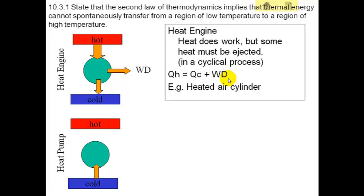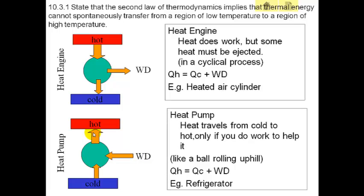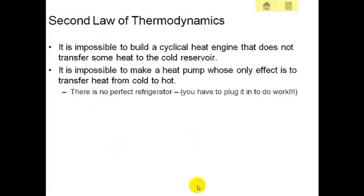On the other hand, if we get heat to go from cold to hot, we have to do work — the work plus the cold thermal energy adds up to the energy delivered to the hot side. Heat travels from cold to hot only if you do work to help it, like making a ball roll uphill — like a refrigerator. A refrigerator takes heat from a cold body and dumps it out the back, which is hot, but it can't do this by itself — that would violate the second law of thermodynamics. You must plug it in; electrical work must be done. So: it's impossible to build a cyclical heat engine that transfers no heat to a cold reservoir, and it's impossible to make a heat pump whose only effect is to transfer heat from cold to hot — there is no perfect refrigerator.